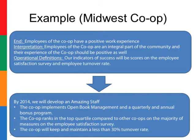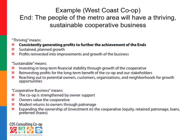These become the strategic objectives for this particular part of the strategic plan. Let's take another look at an example — here's one on the West Coast, done in a bit different way, but a similar sort of idea. The end is: the people of the metro area will have a thriving, sustainable, cooperative business. So what this general manager did was define thriving as consistently generating profits to further the achievement of the ends, sustained planned growth, and profits reinvested into improvements and growth of the business. This bold part becomes a primary piece of the objectives for this particular period in the strategic plan.